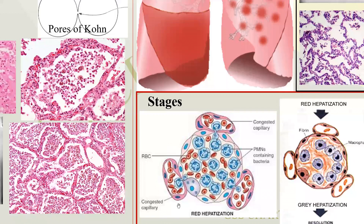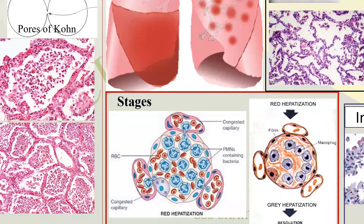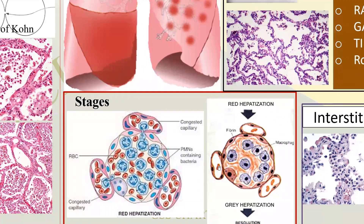In red hepatization, these are the engorged capillaries, with passage of RBCs. Along with that, active chemotaxis causes neutrophils to move in. So initially it is red hepatization. After a few days, these cells are replaced by macrophages for clearance, which we call grey hepatization. Ultimately, after everything is cleared, it becomes resolved — called resolution. Remember the stages: stage of congestion, stage of red hepatization, stage of grey hepatization, and stage of resolution. That will be lobar pneumonia.